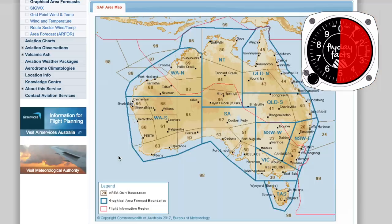Australia used to have 28 regions for area forecasts, which was a bit of a pain if you're going on a long trip because you ended up going through several different areas. That's been reduced now to just 10 distinct areas, and especially for local flights it makes it way easier to look at your area forecast and know exactly what's going on. The new GAFs are released every six hours, covering a 12-hour period — so you get overlapping six-hour windows. How do they look?